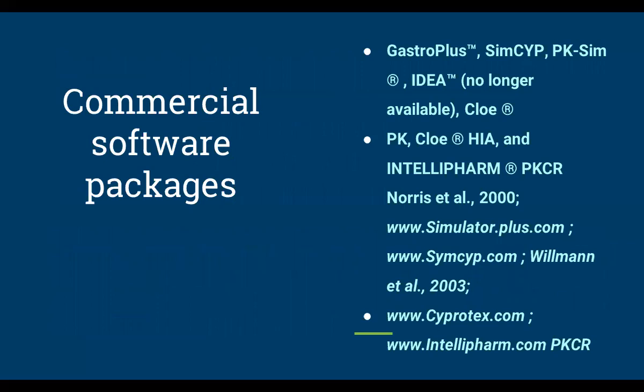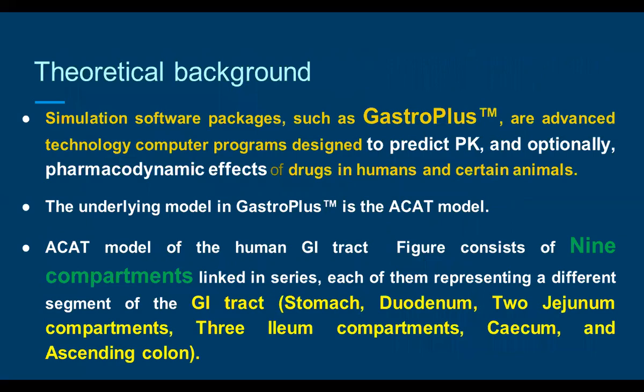The commercially available and most famous software includes GastroPlus, Simcyp PK-Sim, PKChelem, and Intelliform, among many available software packages, to predict in silico models of drug absorption. Coming to the theoretical background, simulation software packages such as GastroPlus are advanced technology computer programs designed to predict pharmacokinetic and optionally pharmacodynamic effects of drugs in humans and certain animals — both preclinical and clinical studies.